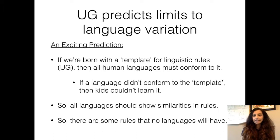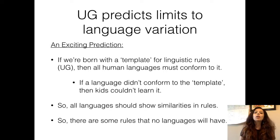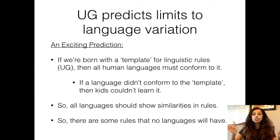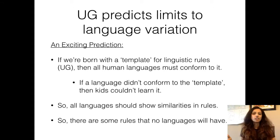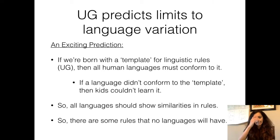An exciting prediction that UG actually makes with respect to language variation is that we are born with a template for linguistic rules — a limitation on how rules operate across languages. These predictions apply not just for English but also for Spanish, Italian, and many other languages. But that's a topic we will look at starting next week.